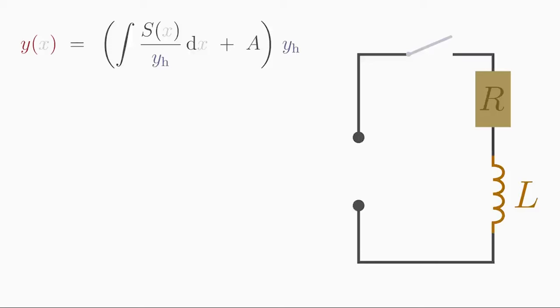Then we take a voltage source which provides a voltage U0 as soon as we close the circuit with a switch. Then a time-dependent current I flows through the coil and the resistor.